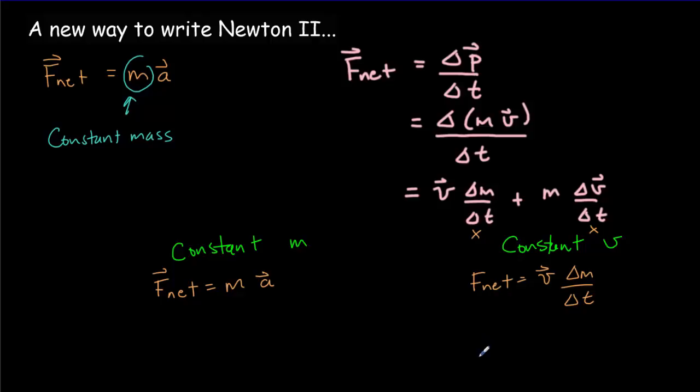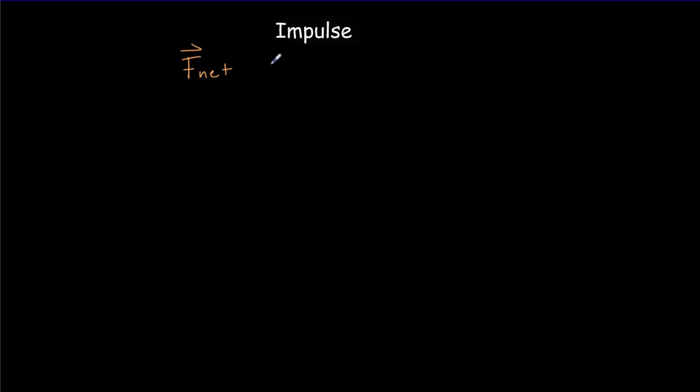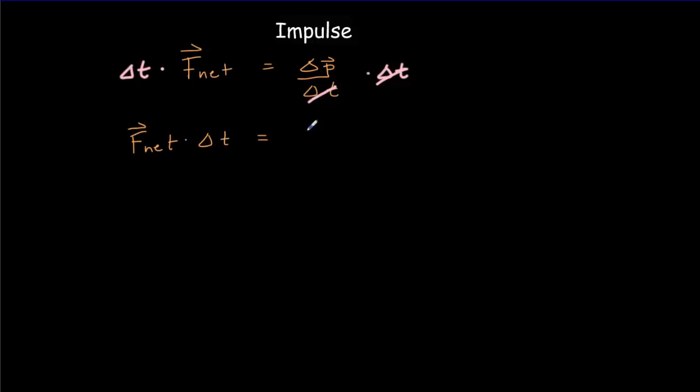If we take this more general Newton 2 equation — that the net force equals the rate of change of momentum — and multiply both sides by the time interval, we get that F_net times the time interval equals the change in momentum. We give this product on the left side a new name: we call it the impulse, represented by the symbol I. So impulse equals change in momentum.